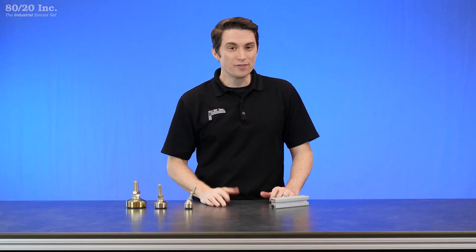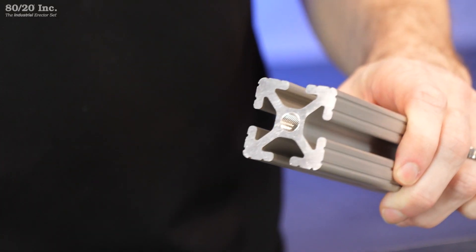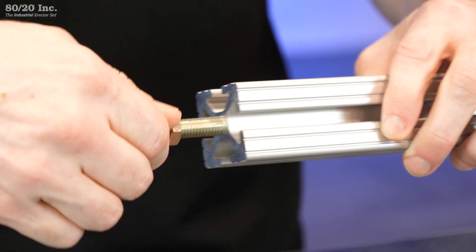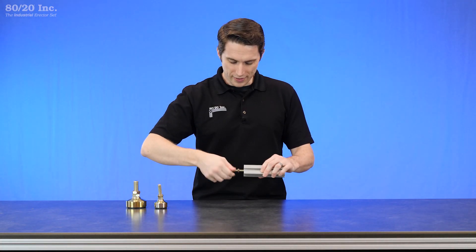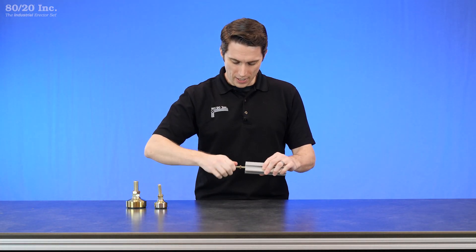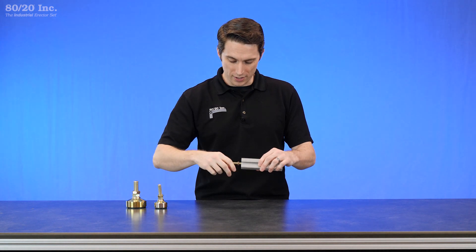When it comes to installing on the end of a profile you'll take your profile with the end tap on it, take your mount and simply thread it into that end tap. You'll get that where you want it and lock it into place by tightening down this nut.